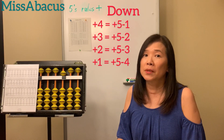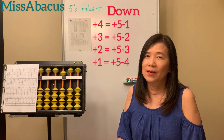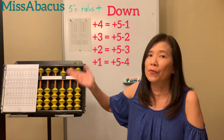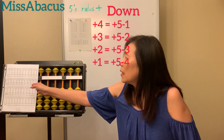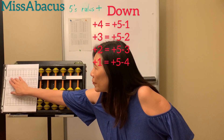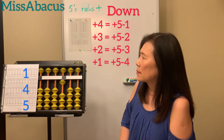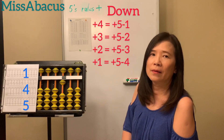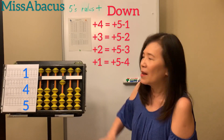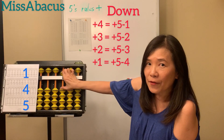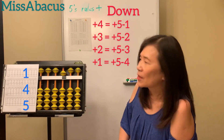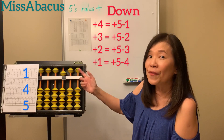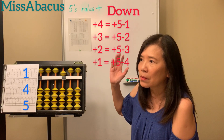So that's plus four, plus three, plus two, and plus one. Just: down five down one, down five down two, down five down three, down five down four. All right, let's try the problems. Number one: one plus four — one, two, three left, but you have five, so use five through. Down five, down one — that's four.